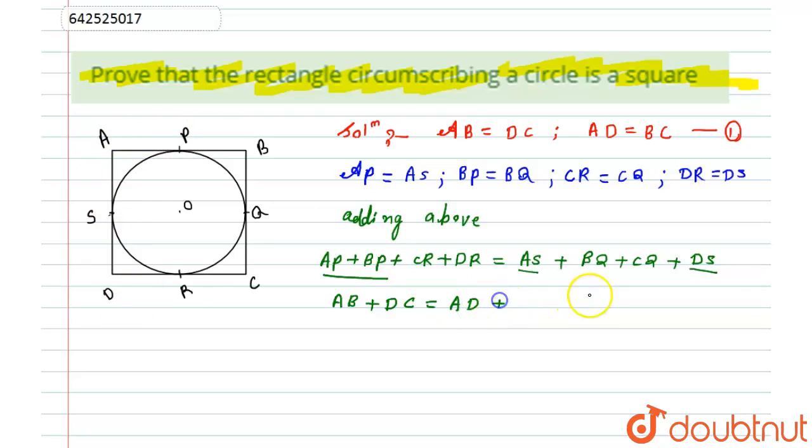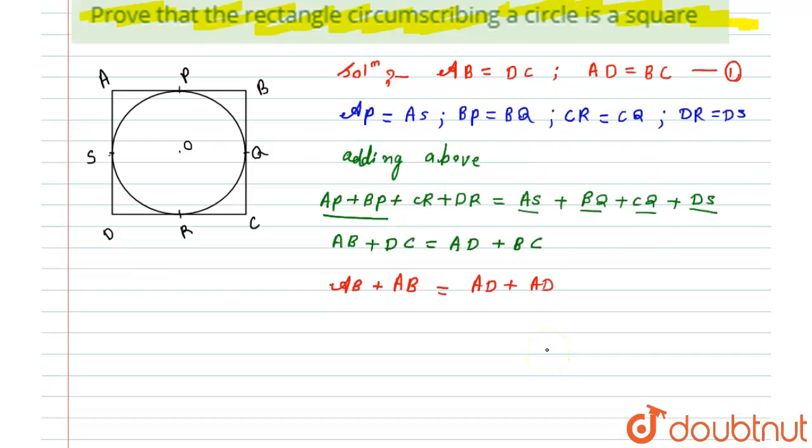Now from equation number one, I can write AB as it is, and in place of DC I can write AB, because both of them are equal. Here AD will be as it is, plus in place of BC I will write AD from equation number one. This will become twice of AB equals twice of AD. From here I will get AB is nothing but equals to AD.